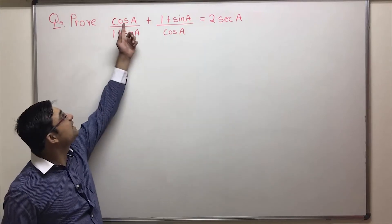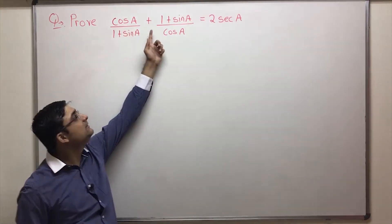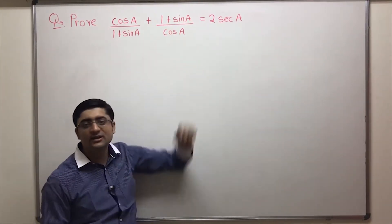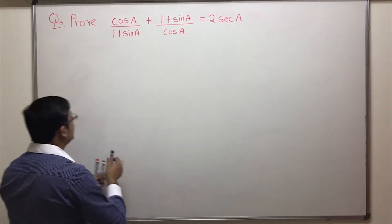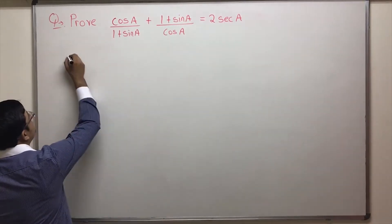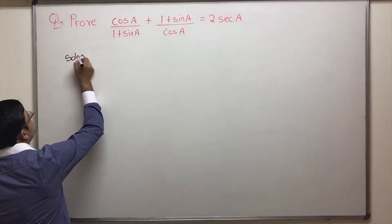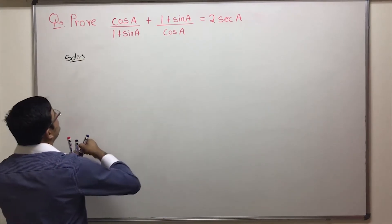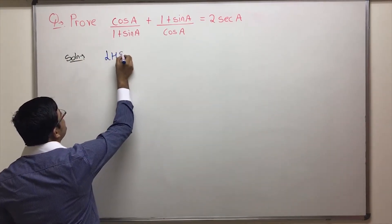In this question, we have to prove that cos A upon 1 plus sin A, plus 1 plus sin A by cos A, is equal to 2 sec A. So let's begin from the LHS.